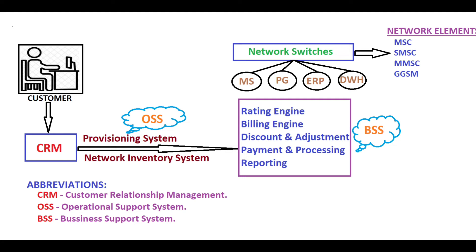For example, if a customer wants to stop services for a particular duration, he will deactivate, suspend, or terminate the services. The second part is the Network Inventory System, where the actual implementation of services - activation, deactivation, suspension, and termination - will be done.